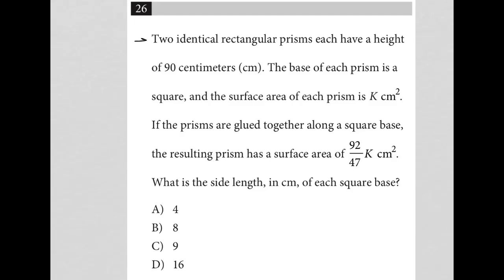This question says we have two identical rectangular prisms, which each have a height of 90 centimeters. I'm going to use the plug-in picture strategy really quickly so I can visualize these rectangular prisms. I'm going to draw them vertically oriented here. I don't really care about how nice they look, I just want to make sure I can see that they're rectangular prisms. And of course I know that they're 90 centimeters in terms of the height.